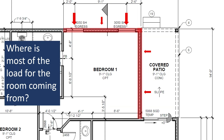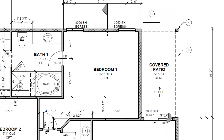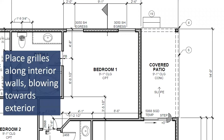Once we've identified where our hot wall or walls are, we know that that is where we want our air to be blowing towards. To do that, we place the grills along the interior wall opposite from the hot wall.